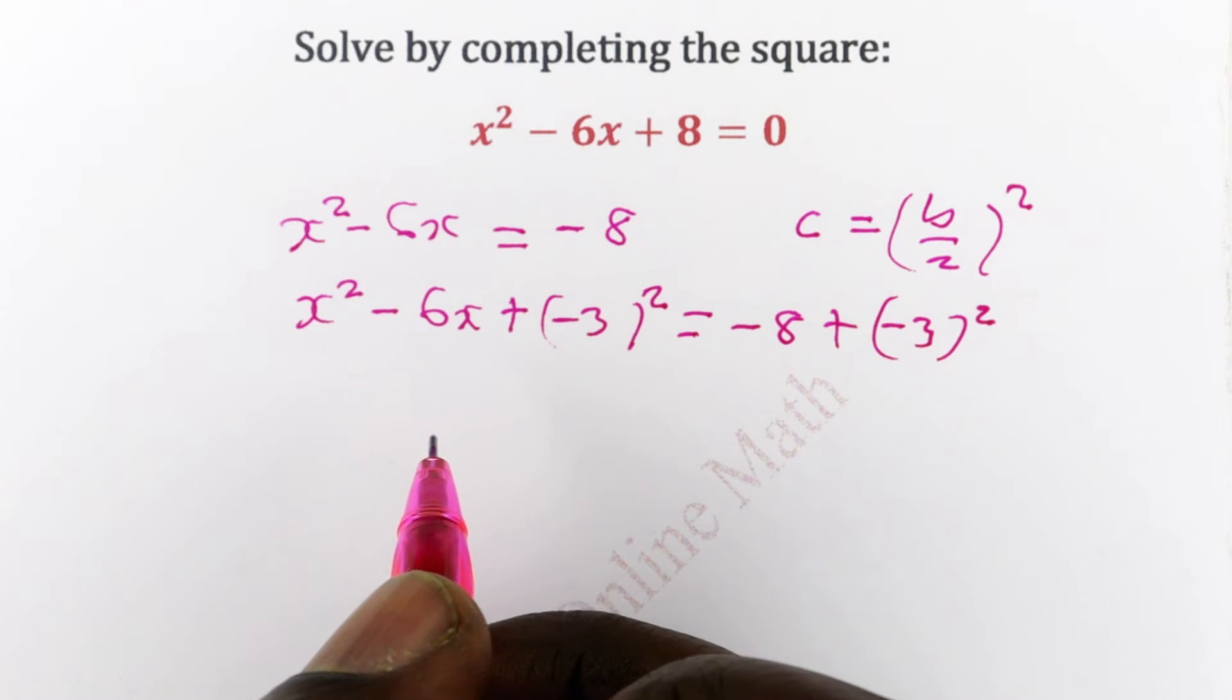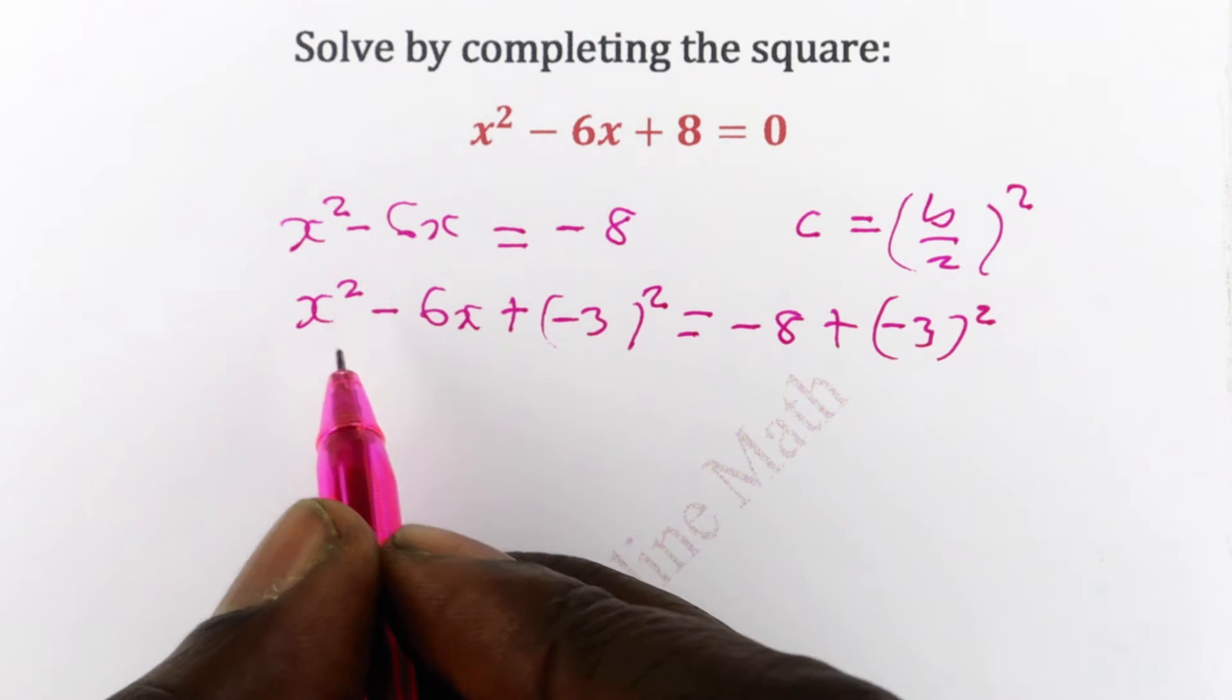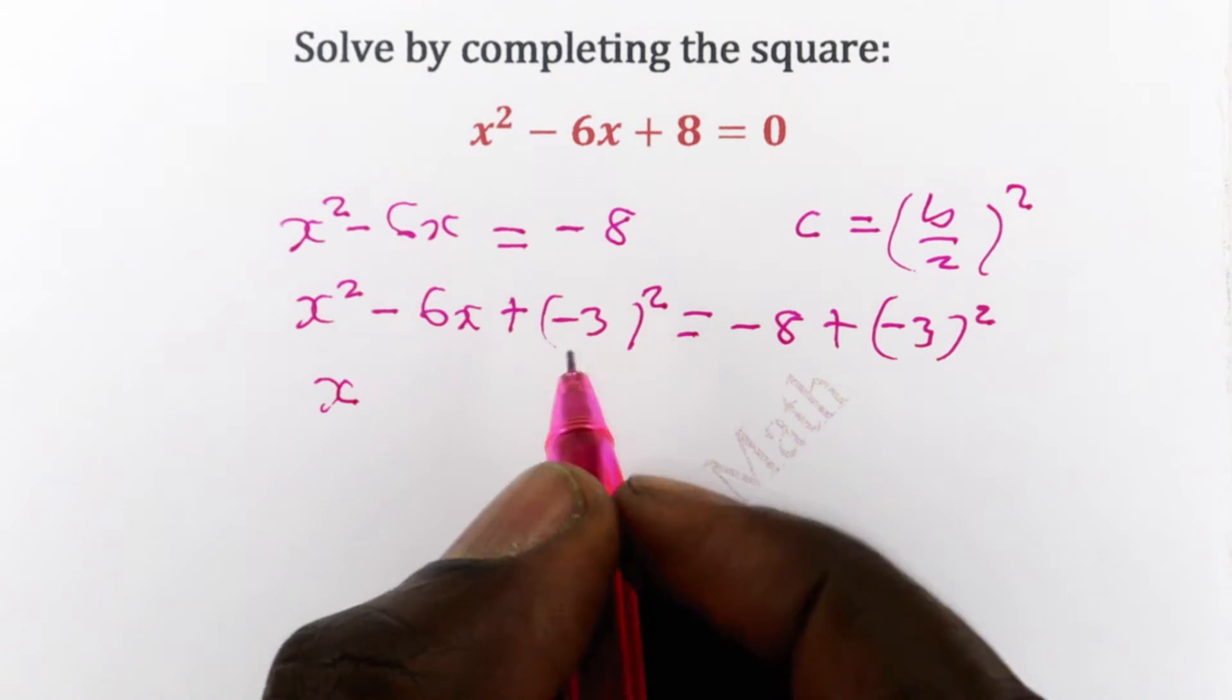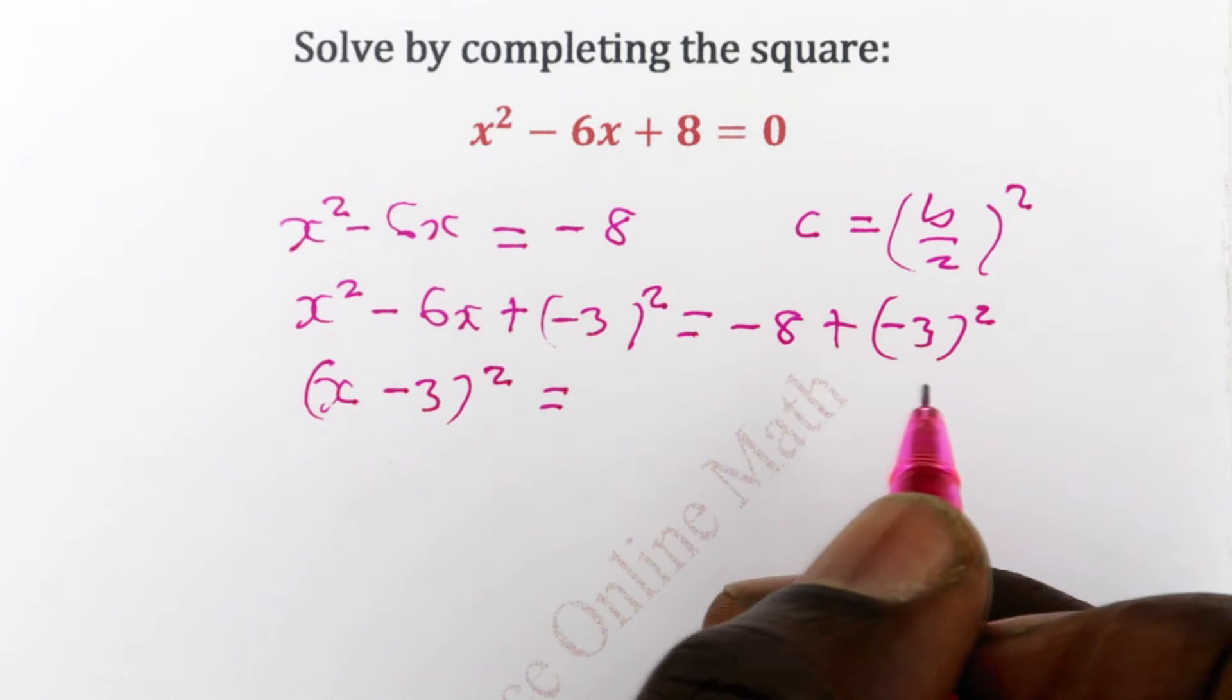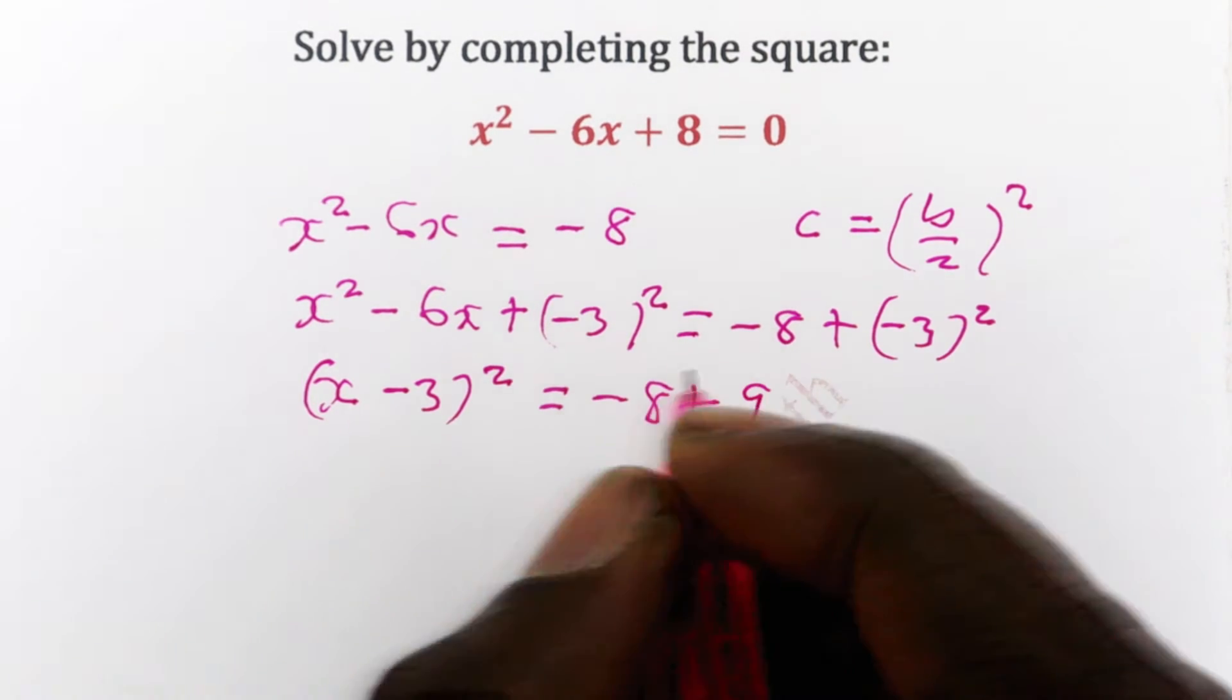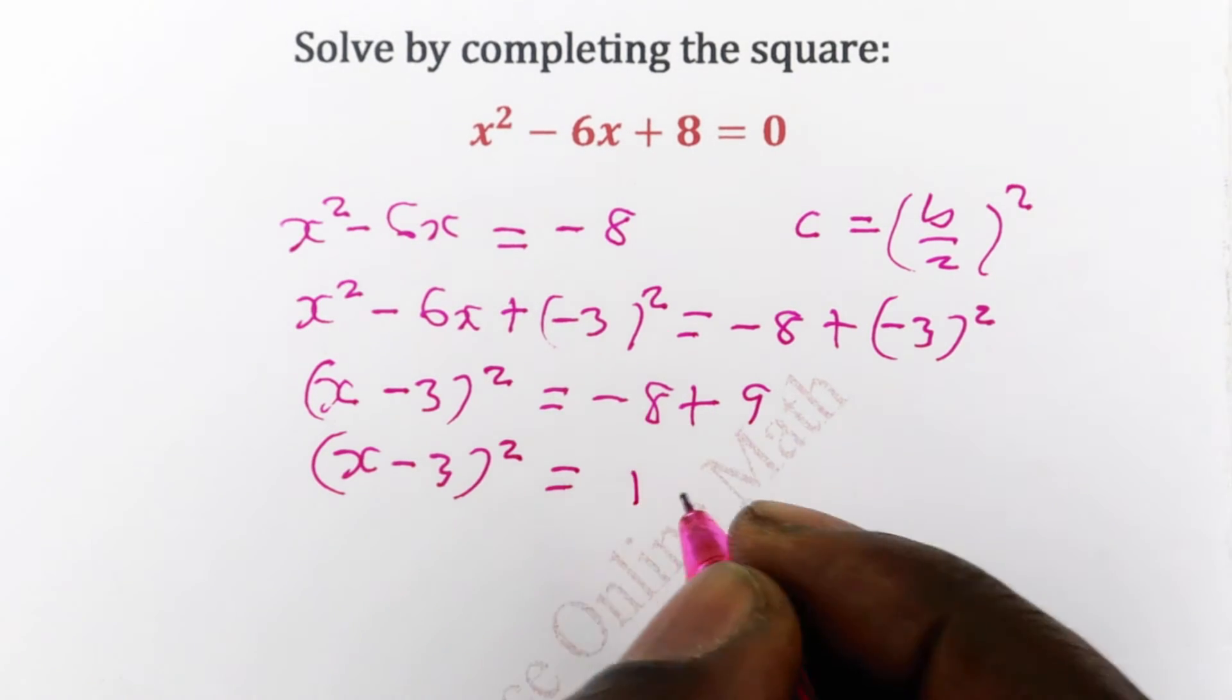So the next thing is to take the perfect square on the left hand side and simplify the right hand side. So you have minus 8 plus negative 3 squared which is 9. So it means you have x minus 3 squared is equal to 1.